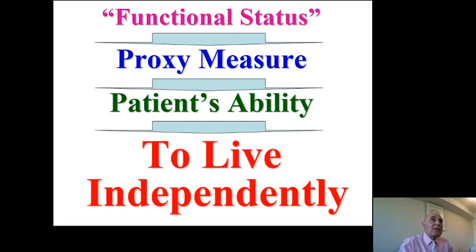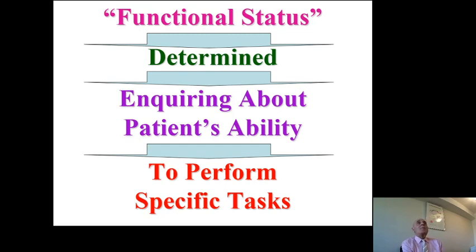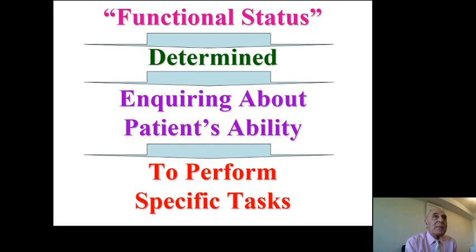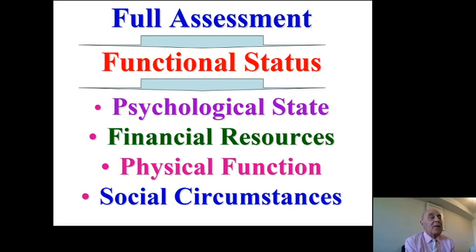We need to help seniors achieve independence. Functional status is determined by inquiring about the patient's ability to perform specific tasks — we need to talk with seniors to see which activities they want to do themselves. Full assessment may include psychological state, financial resources, physical function, and social circumstances.